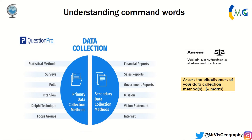When you 'assess,' you sit on the fence and look at both sides — you weigh up the pros and cons. For example: assess the effectiveness of your data collection methods. You could say the advantage of primary data is that you've collected it yourself — interviews give a really good in-depth understanding of people's opinions. However, they take a lot of time and the data might not be accurate. On the other hand, secondary data can be cheaper to collect and collected by experts, but it can be biased. You have to give pros and cons of your data collection methods — ideally for six marks, you cover three methods.